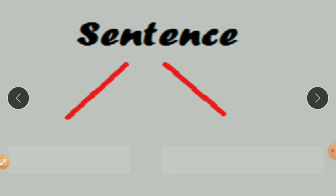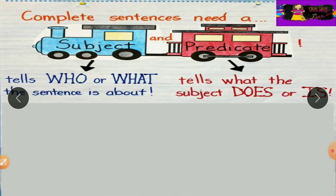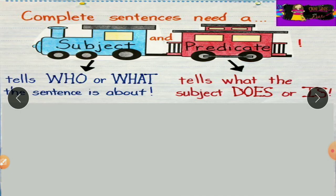Before starting subject and predicate, we will see what is a sentence. You already know it is a group of words which makes or gives a complete sense. A sentence is always divided into two parts — that is subject and predicate. So let's see what subject and predicate are.